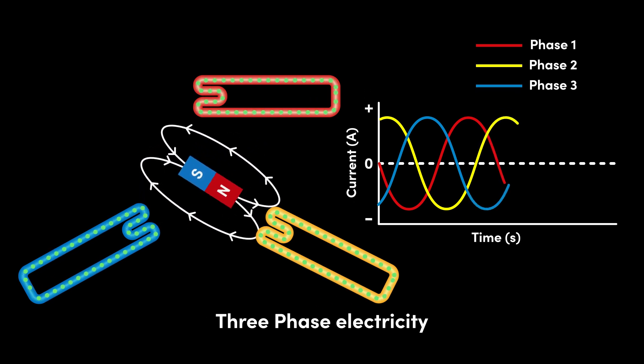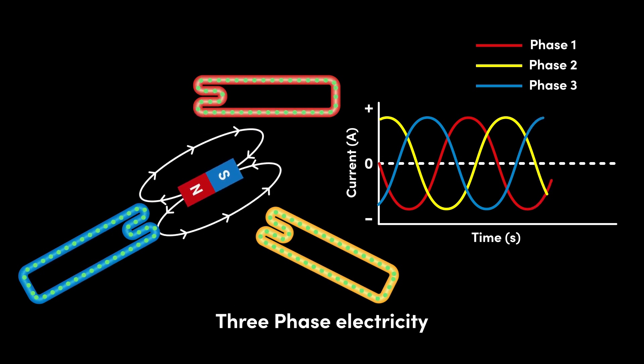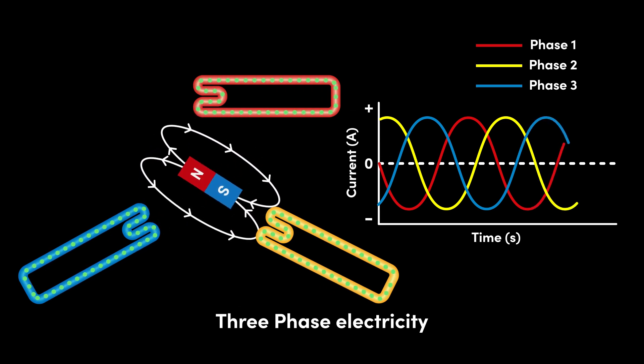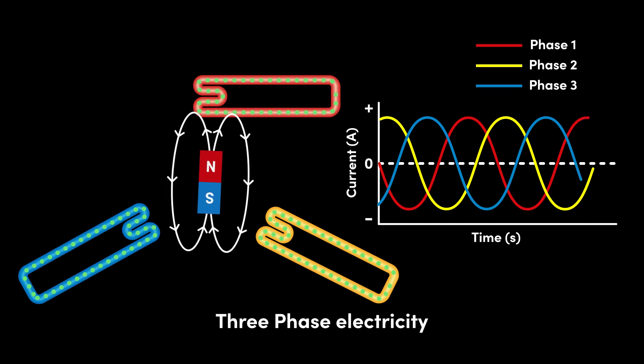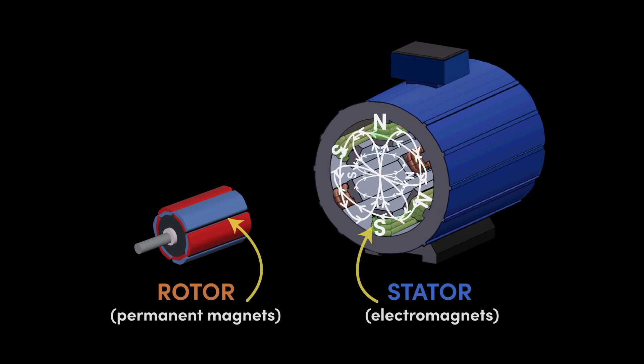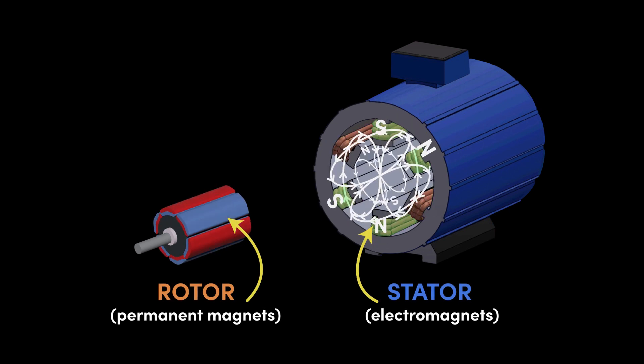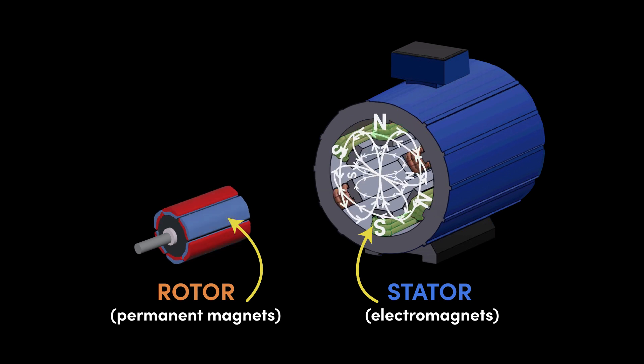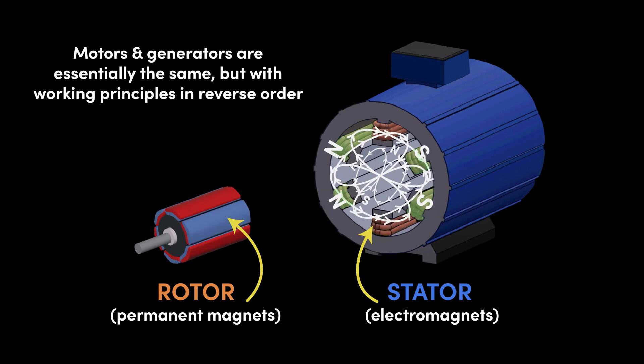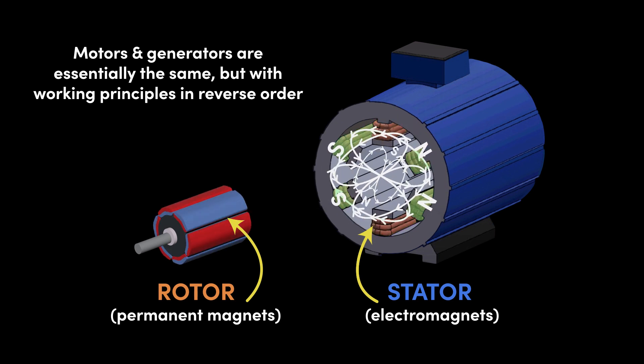Although our schematic here is somewhat simplified, this is the basic construction and working principle of a generator. In reality, a generator looks a bit more like this. If you have seen our video on electric motors, this should look familiar. That's because a motor and a generator are essentially the same thing, but with the working principles running in reverse order. So if you haven't already seen our video on motors, make sure you check it out.